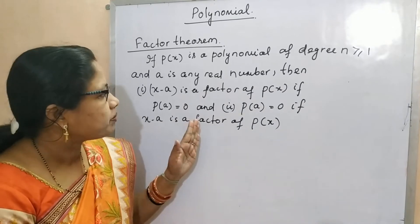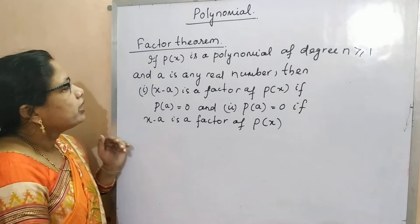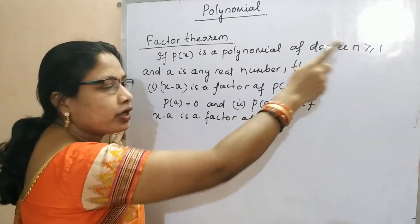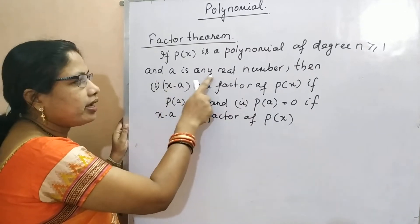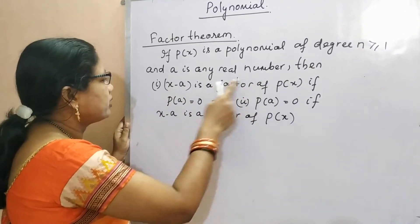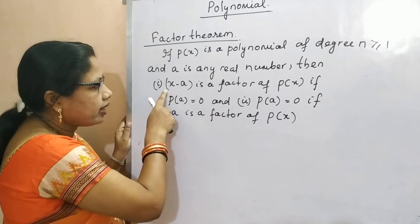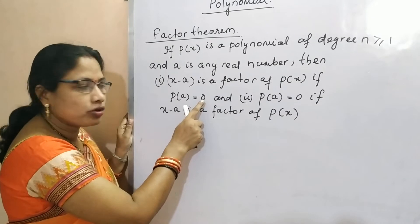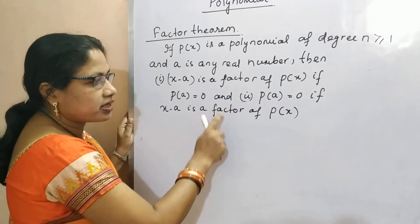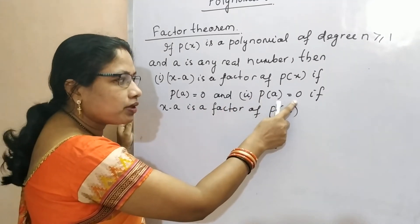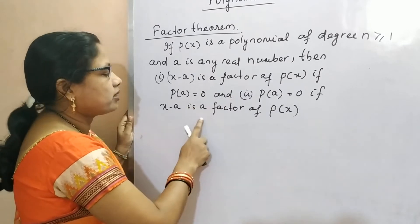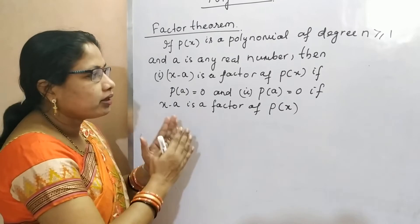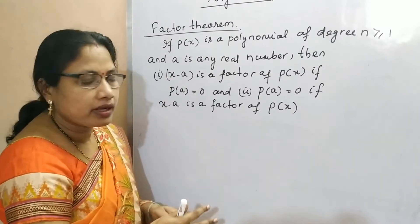I have written the statement of the factor theorem here. If P of X is a polynomial of degree N greater than or equal to 1, and A is any real number, then: first statement — X minus A is a factor of P of X if P of A is equal to 0. And second statement — P of A is equal to 0 if X minus A is a factor of P of X. We will prove these two statements on the basis of the remainder theorem.